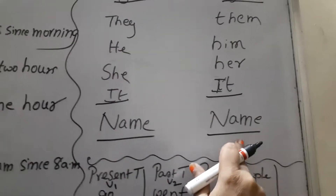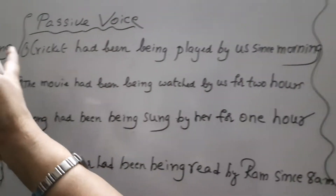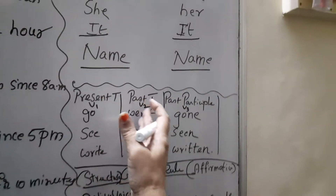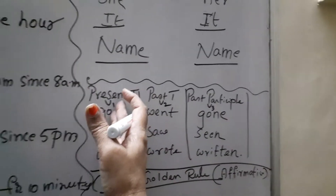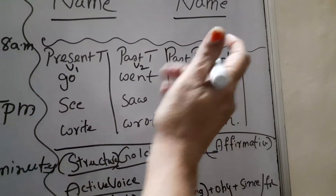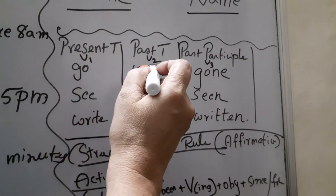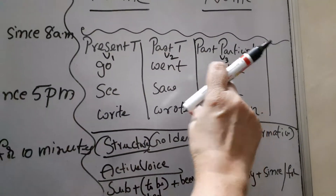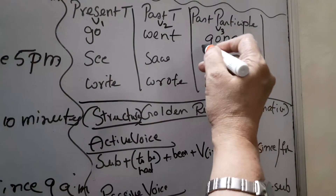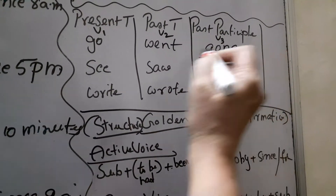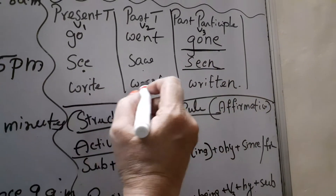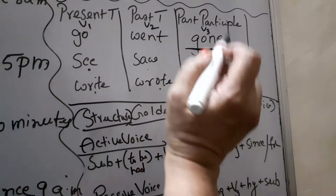To convert Active Voice into Passive Voice, you should know this table: Present tense (V1), Past tense (V2), Past participle (V3). For example: Go, Went, Gone. See, Saw, Seen. Write, Wrote, Written. You should know these forms.